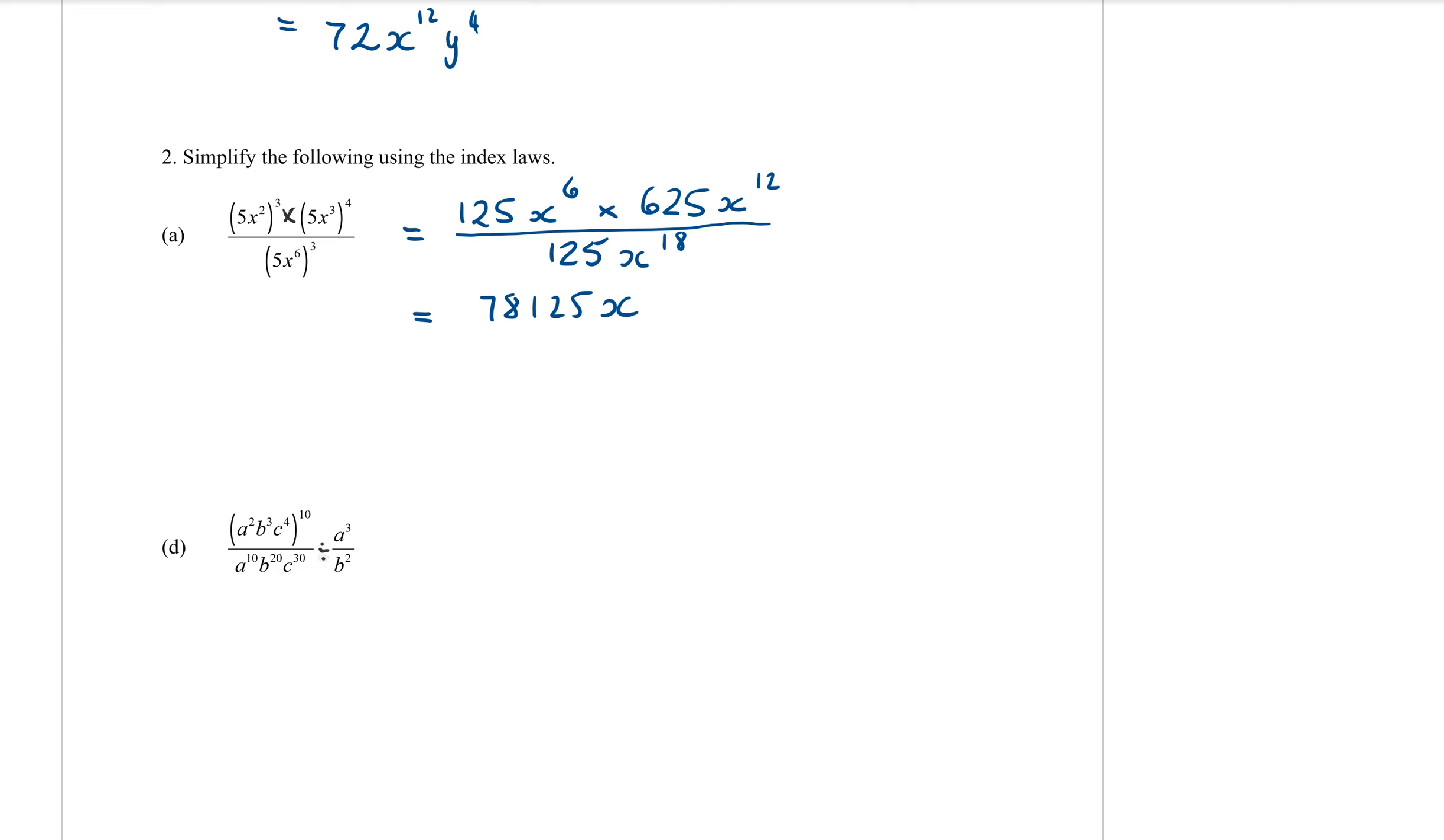So 6 plus 12 is 18 over 125, X to the power of 18. I haven't done anything on the bottom yet. I was just multiplying the tops together. Now by doing that, hopefully you can see I have got X to the power of 18 on the top and X to the power of 18 on the bottom. They're going to completely cancel out. Then the numbers. Use your calculator because those numbers are far too big for us to do in your head. Type in 78,125 over 125. What did you get? 625. Did we all get that? Lovely. Trusting you guys.